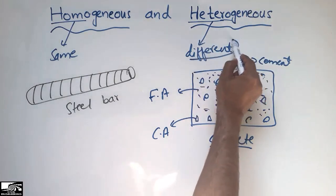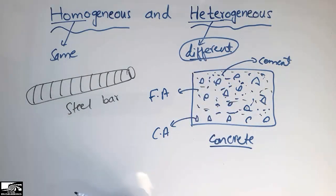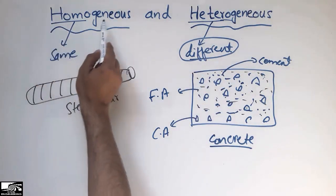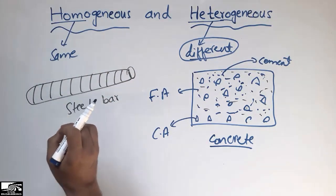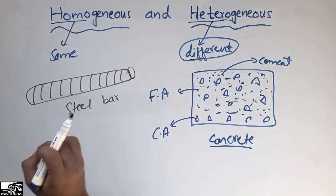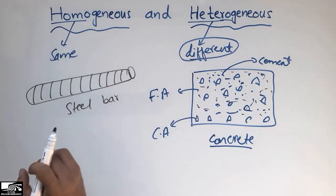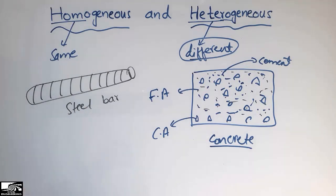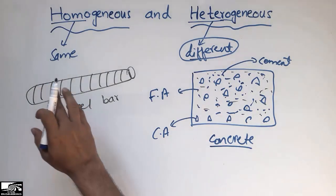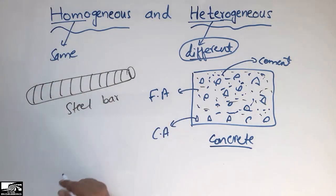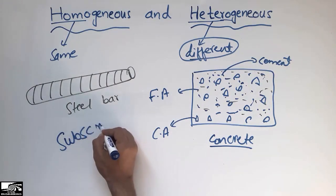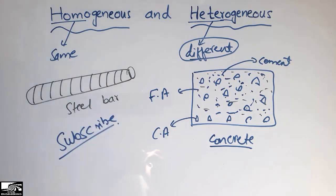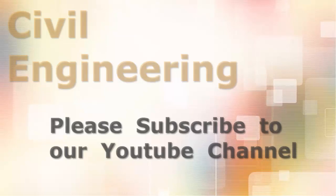So heterogeneous means different composition and different appearance, while homogeneous material looks like it is made of the same material with the same appearance. Hope you guys understand the main difference between homogeneous and heterogeneous. Don't forget to subscribe to the channel for daily civil engineering videos. Thank you.